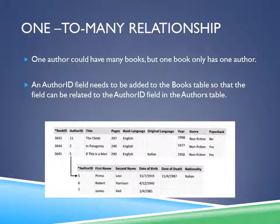One-to-many relationships: one author could have many books, but one book only has one author. To fix this, an author ID field needs to be added to the books table so it can be related to the author ID field in the authors table. This solves the redundancy problem — to find a book's author, you look up the author ID and cross-reference the authors table. If you change an author's information, the change is reflected in one place rather than having to update it repeatedly.